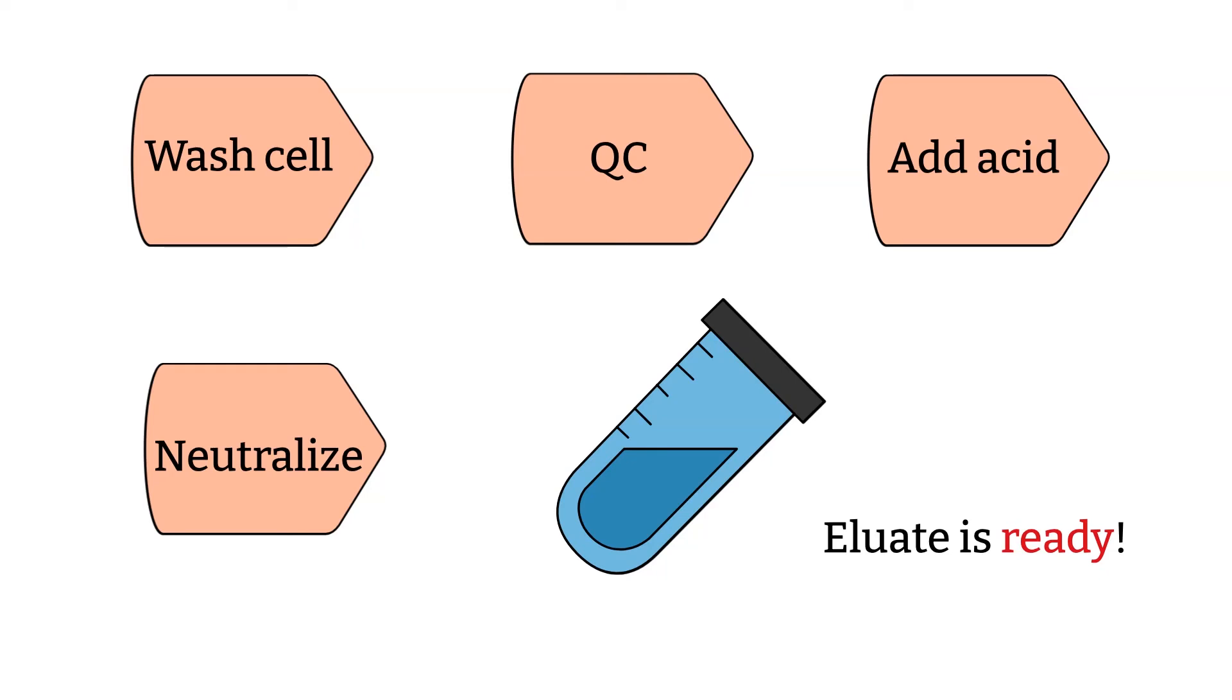Normally, the eluate will be tested against a panel of reagent red blood cells. Please keep in mind that if the patient is being evaluated for ABO blood group antibodies, the eluate will need to be tested with A1 and B reagent cells as well. So add those to your panel.